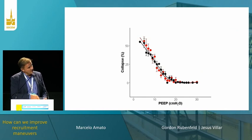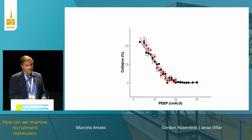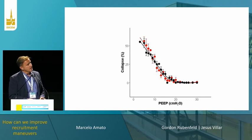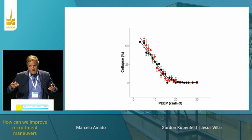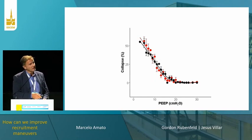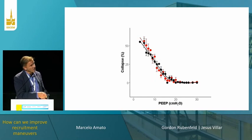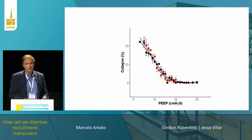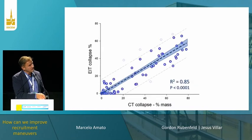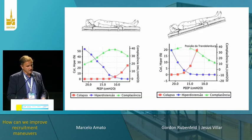This method is also very good because we did validation studies comparing CT and EIT, and the coincidence is very large. The Costa method was designed to be a good correlate or surrogate of CT collapse, and this validation study shows the correlation between CT and EIT is very strong.